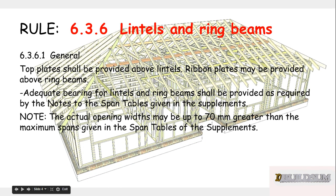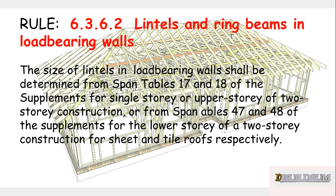Clause 6.3.6 says that top plates shall be provided above lintels; ribbon plates may be provided above ring beams. Adequate bearing of lintels and ring beams shall be provided as required by the notes to the span tables given in the supplements. The actual openings may be up to 70mm greater than the maximum spans given in the span tables.